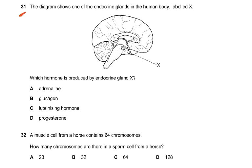Question 31: the diagram shows one of the endocrine glands labeled X, which is the pituitary gland. Which hormone is produced by this gland? The answer is the luteinizing hormone (LH). FSH and LH are produced by the pituitary gland; progesterone is produced by the ovary; glucagon by the pancreas; adrenaline by the adrenal glands.